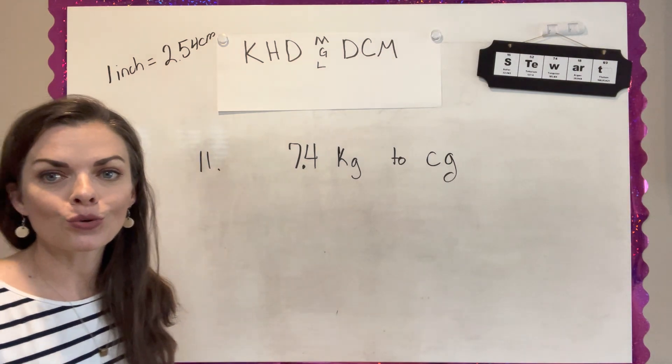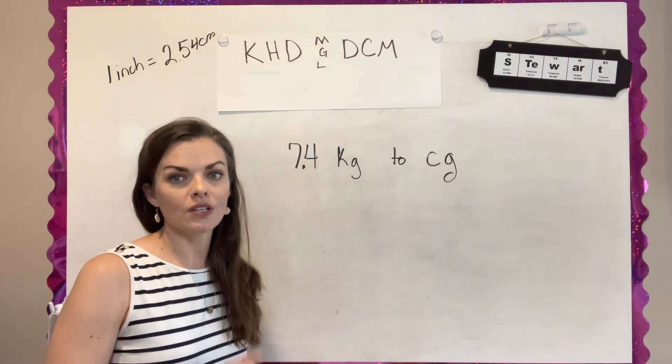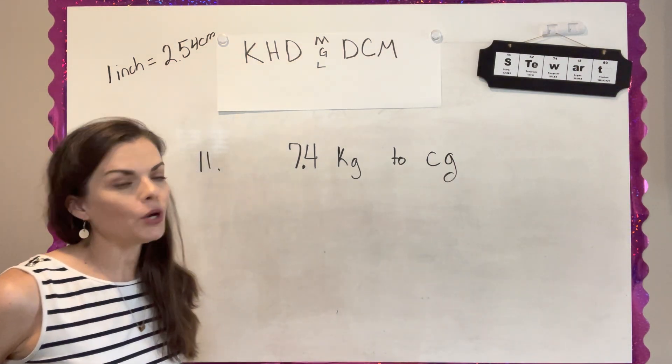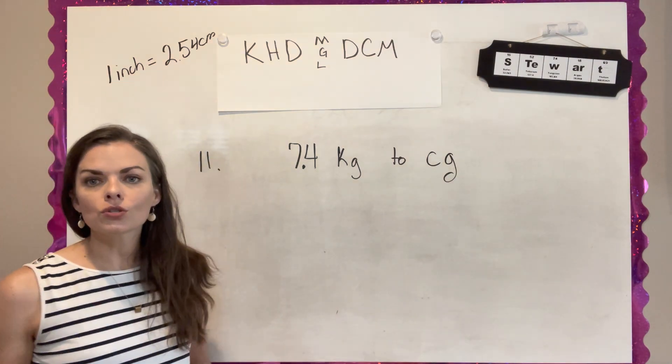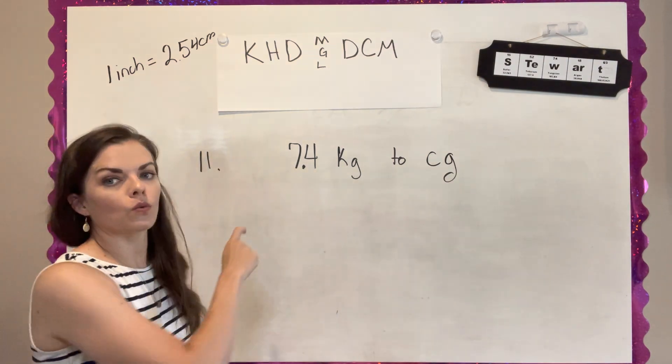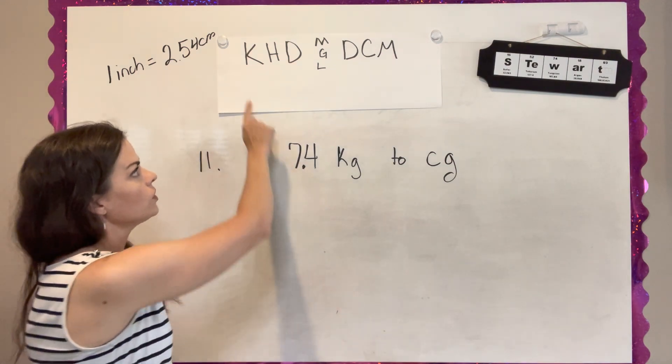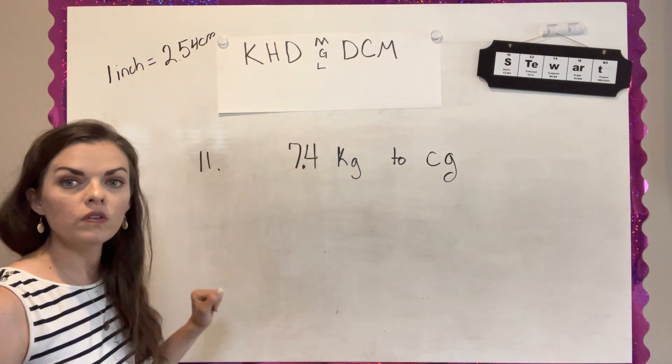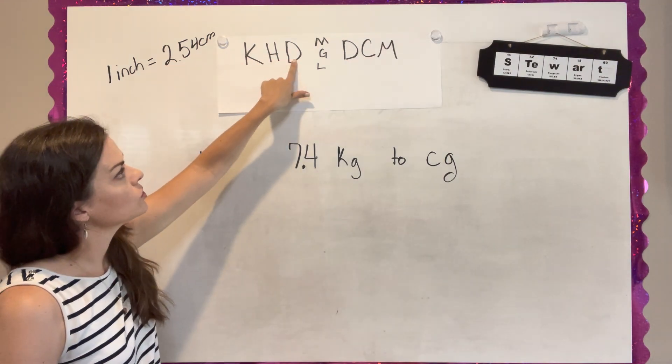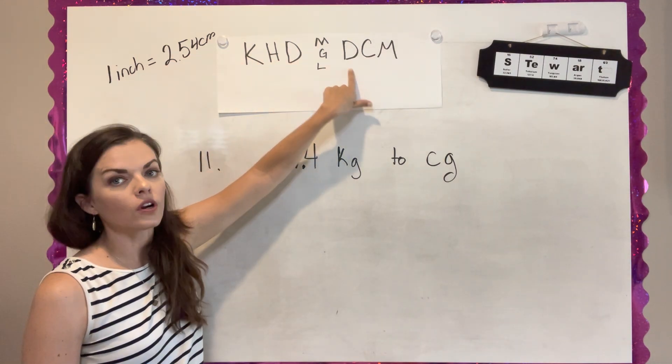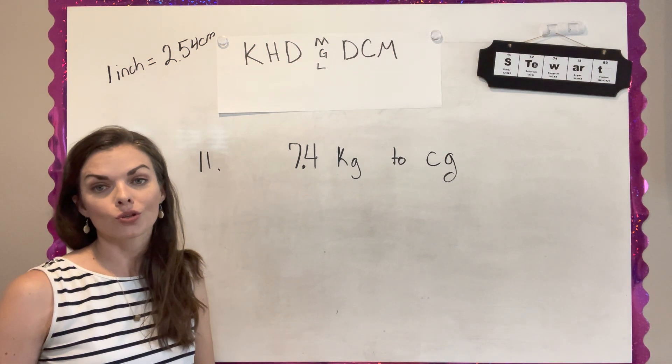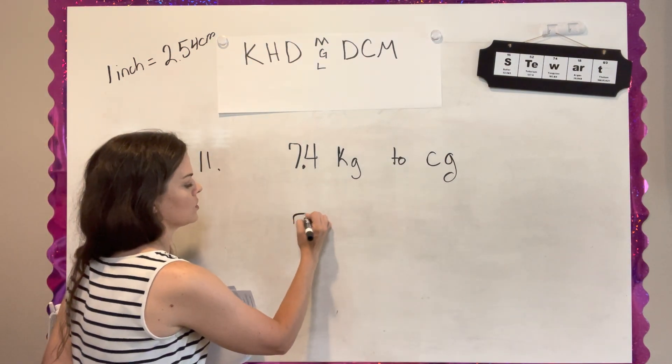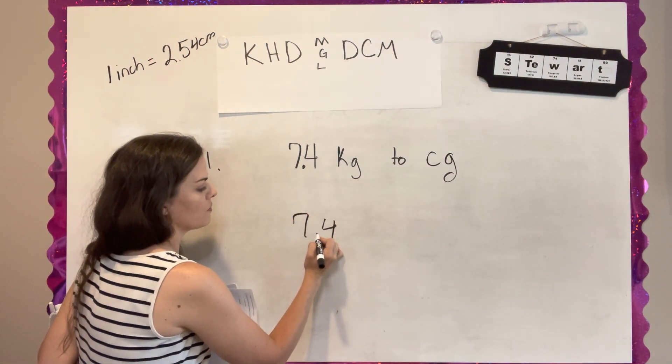Question 11 is a great place to get a lot of practice using King Henry Died Drinking Chocolate Milk. Except for not using meters or liters, this is the first one that we get where we're actually using the G for grams. So we're going from kilograms all the way across to centigrams. So we're moving to the right and going 1, 2, 3, 4, 5 hops to the right to go from kilograms to centigrams.